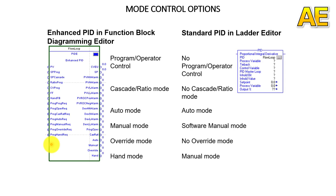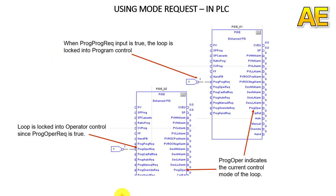Regarding the use of mode requests in the program: if the value of the tag linked to pin ProgProg equals 1, then the loop is locked into program control mode, and the value output of pin ProgOper is also set to 1. Similarly, if the value of the tag linked to pin ProgOper equals 1, then the loop is locked into operator control mode, and the output of ProgOper is also set to 0.